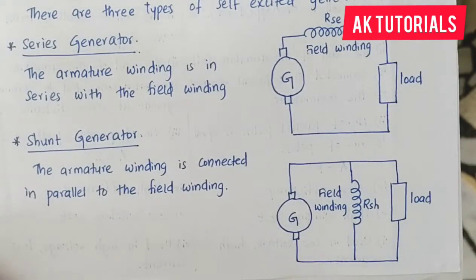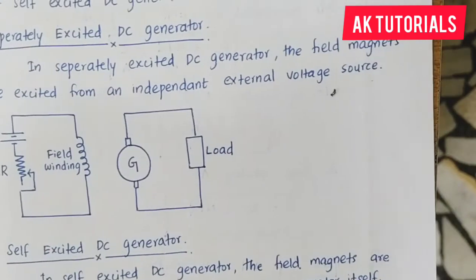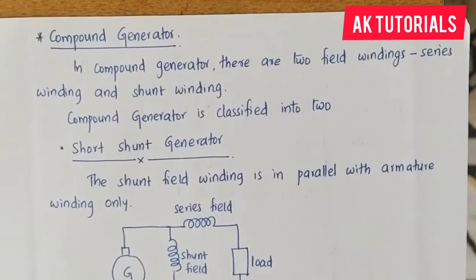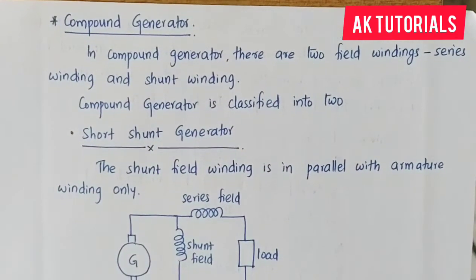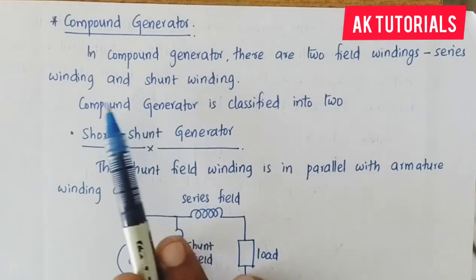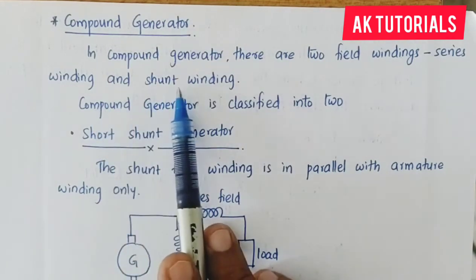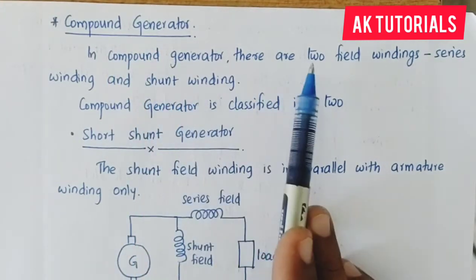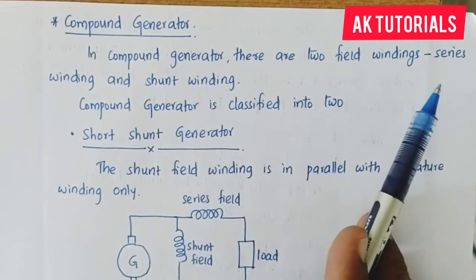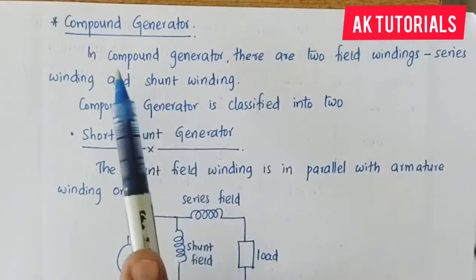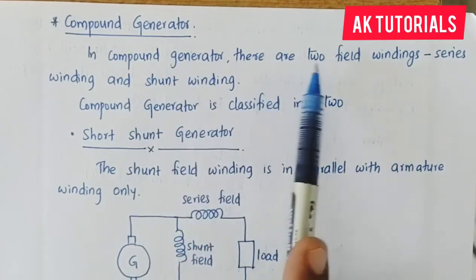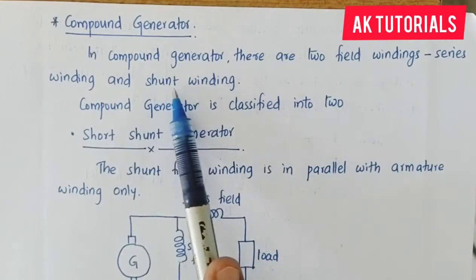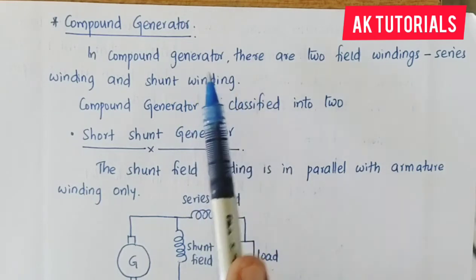The three types of self-excited DC generators are: series generator, shunt generator, and compound generator. The compound generator has two field windings: a series winding and a shunt winding.